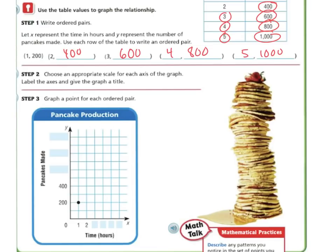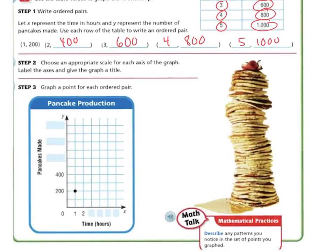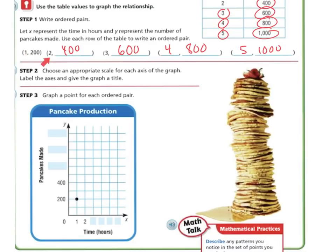Next we're going to choose the approximate scale for each axis on the graph and label it. So we have pancakes made and then we have the time in hours. We're going to do these in one-unit intervals: 1, 2, 3, 4, 5. And then we're going to do these in 200 intervals because we have 200, 400, 600, 800, so we're going to label 600, 800, and 1,000.